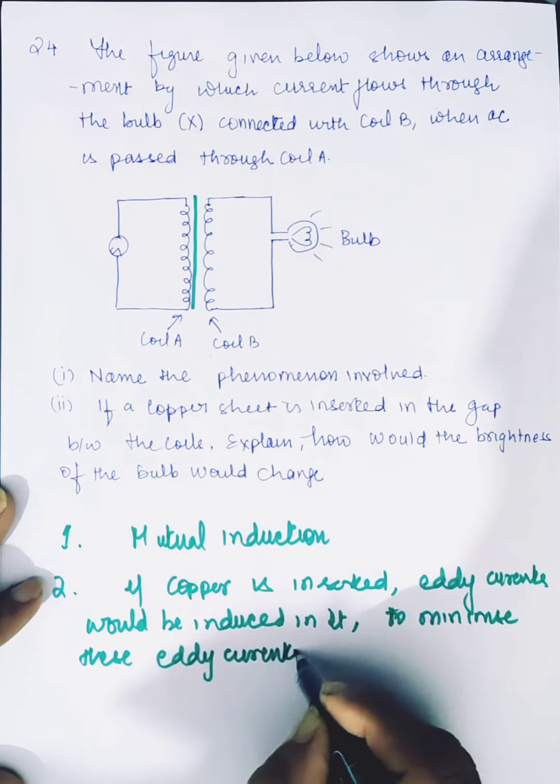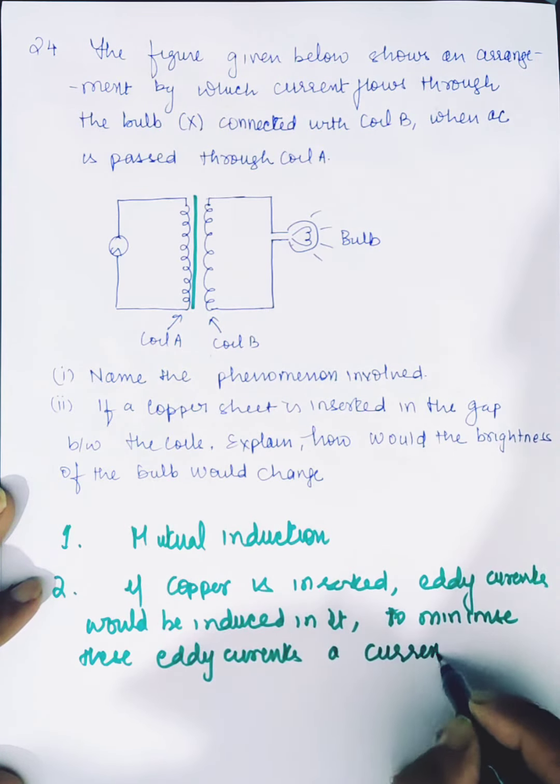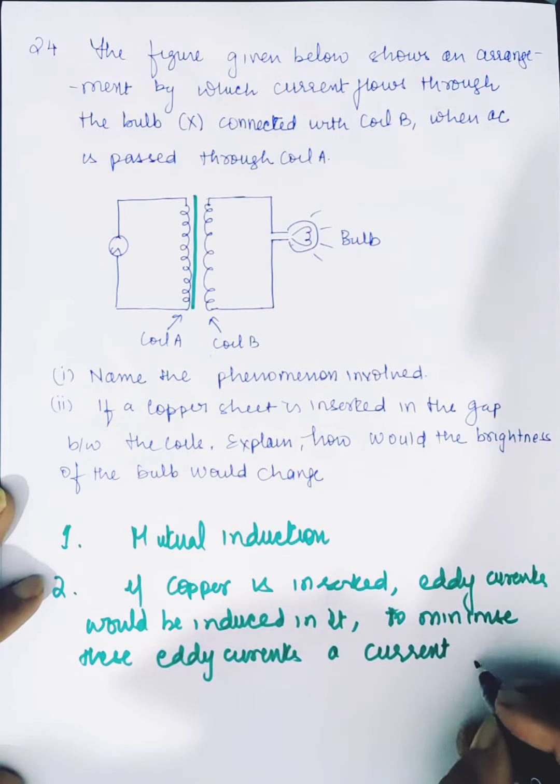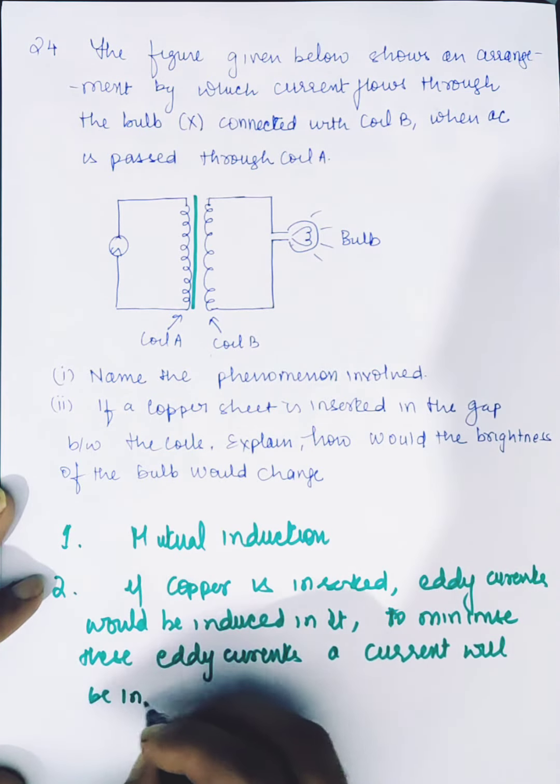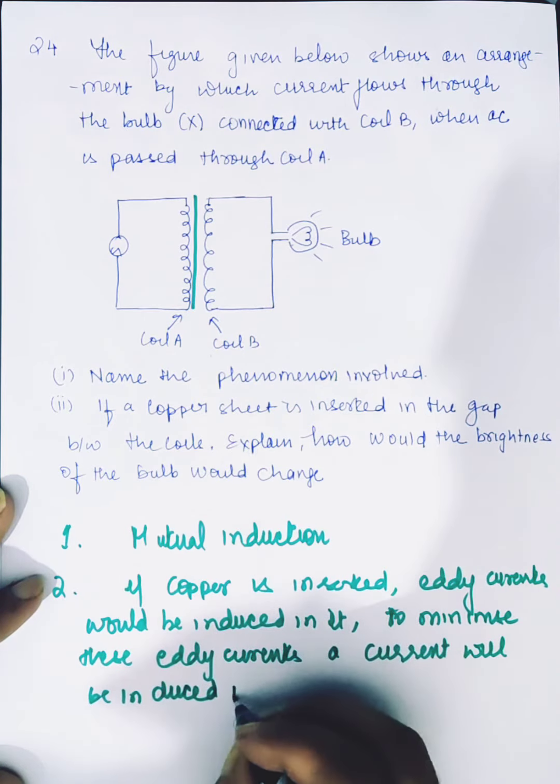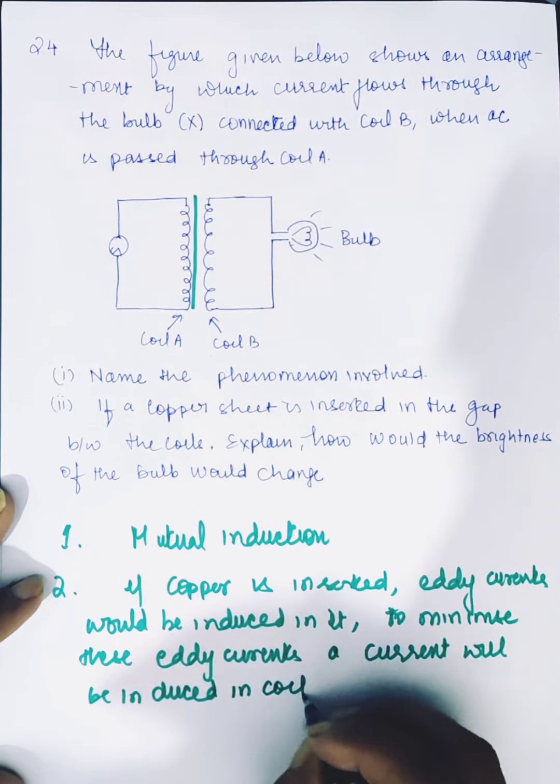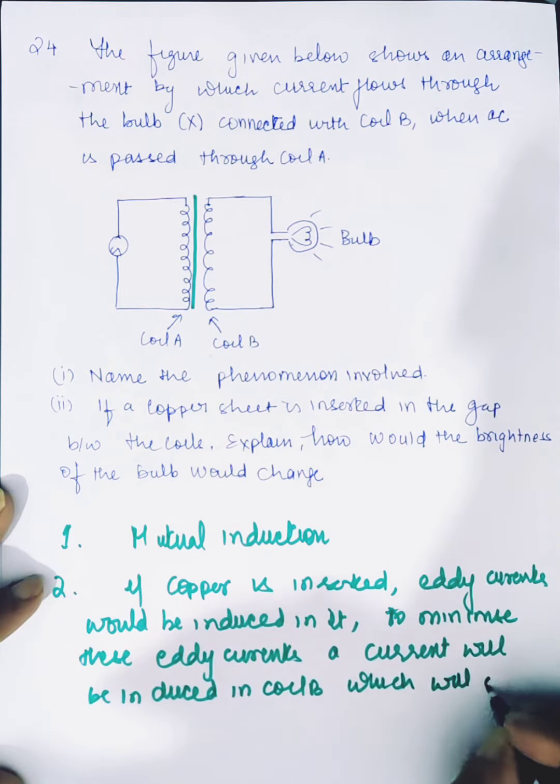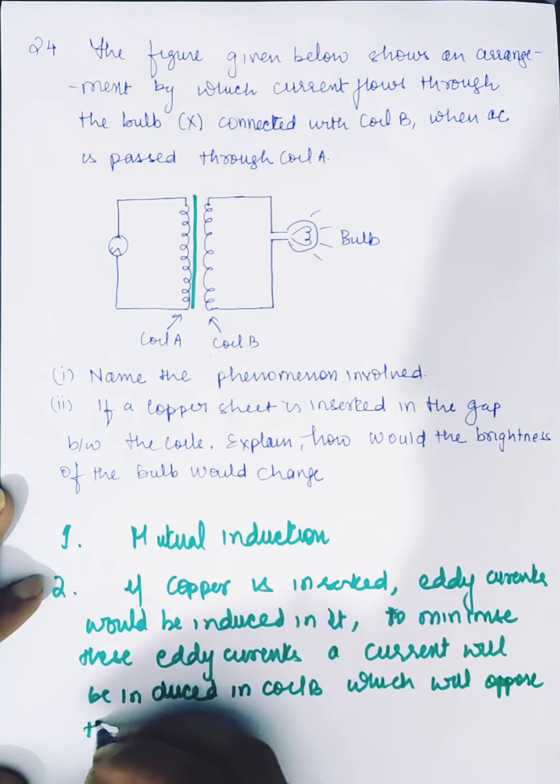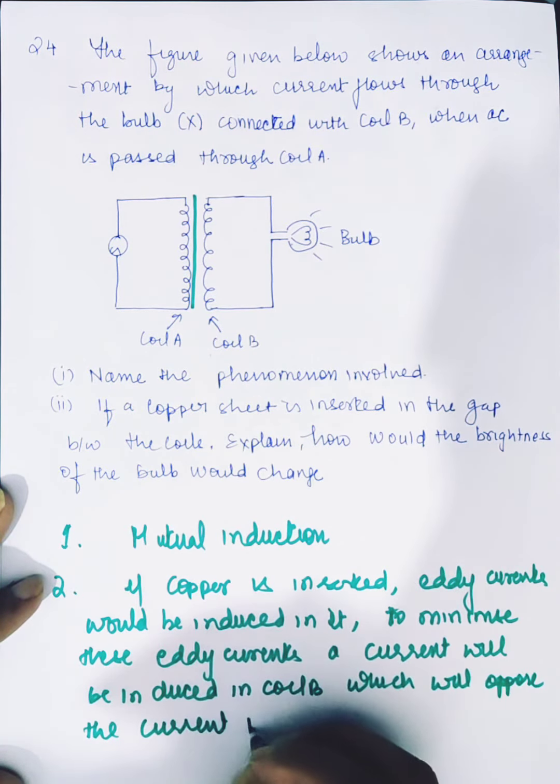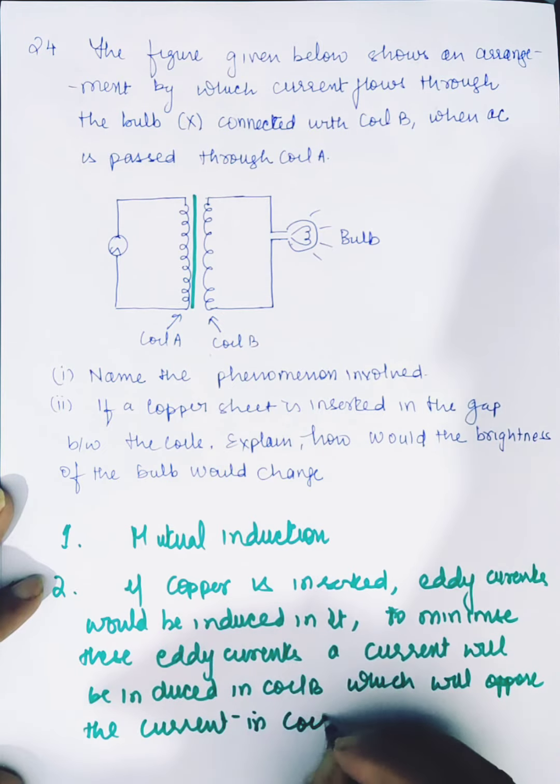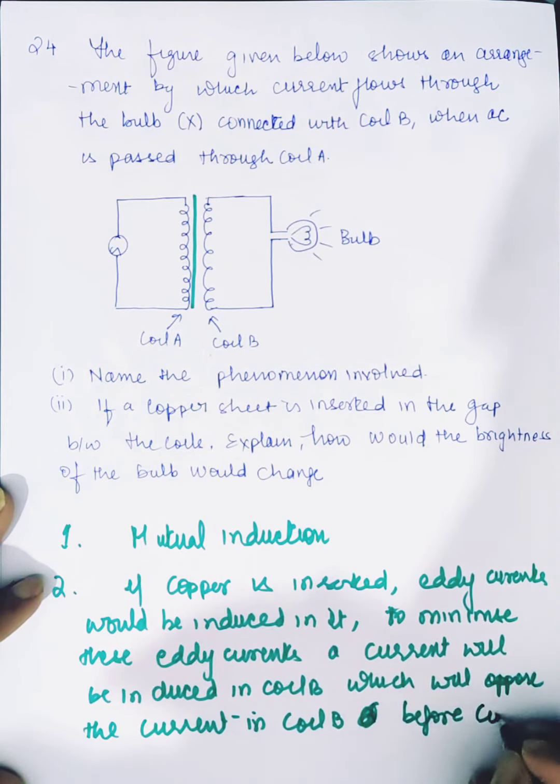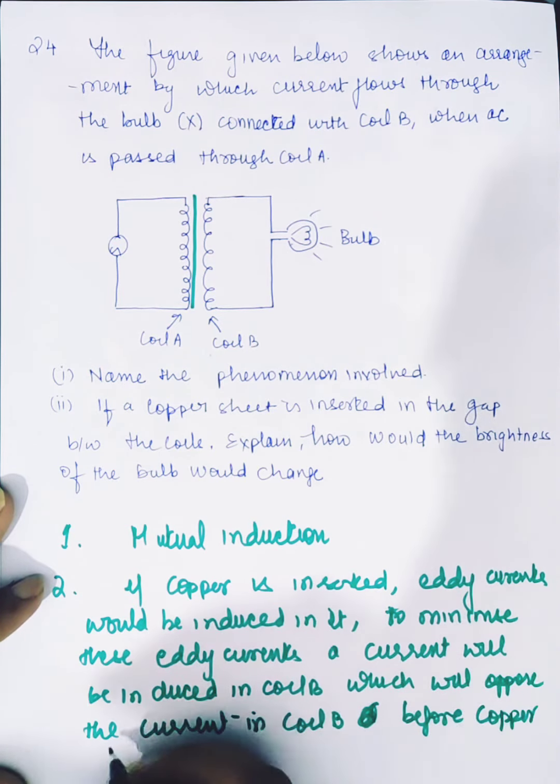A current will be induced in coil B, which will oppose the current. Net current in coil B before copper sheet was introduced.